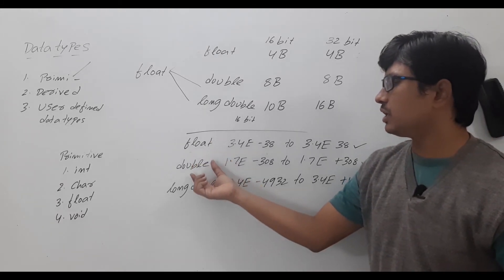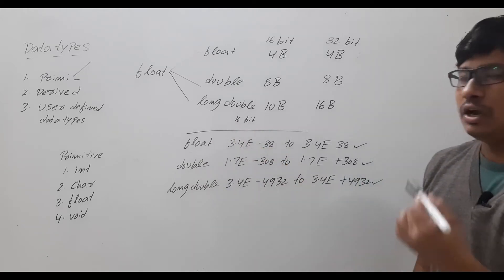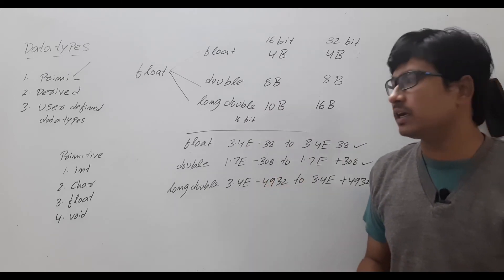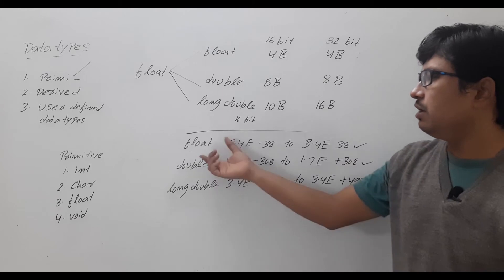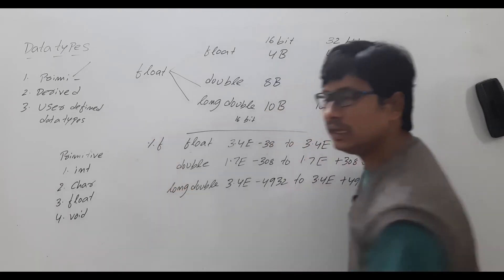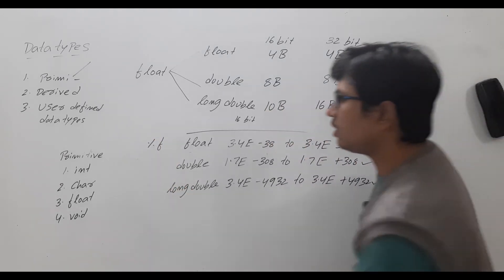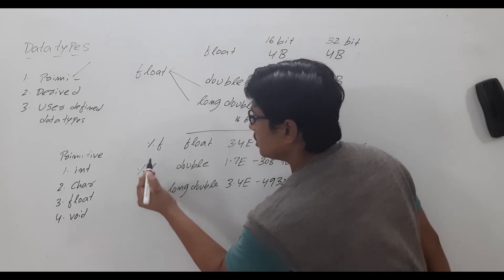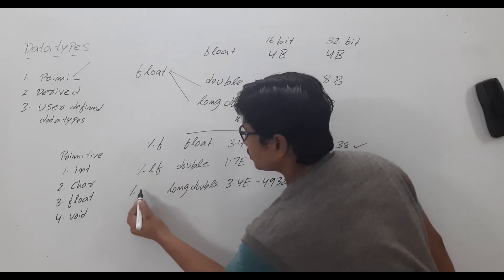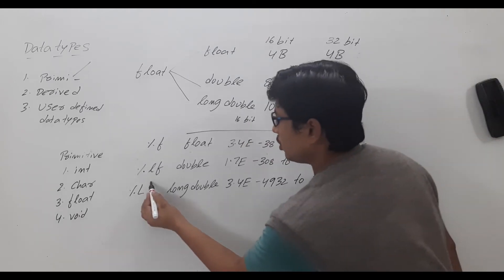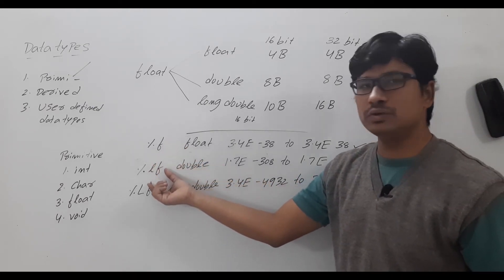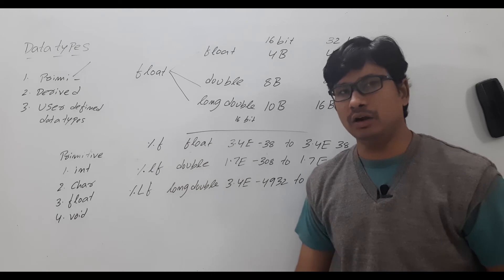Now regarding format specifiers for float, double, and long double: if you are using float, the format specifier is %f. If you are using double, it will be %lf (percentage small l, small f). If you are using long double, it is %Lf (capital L, small f). These are the format specifiers you should use whenever you use float, double, and long double.